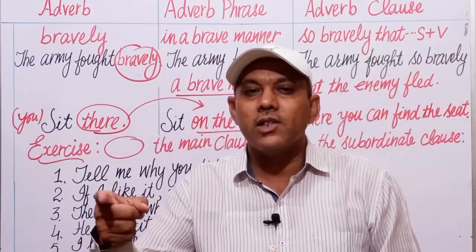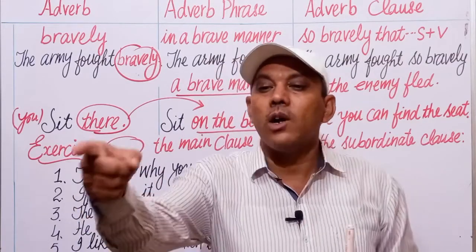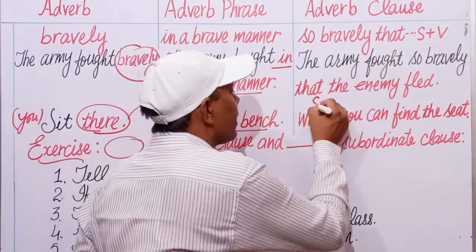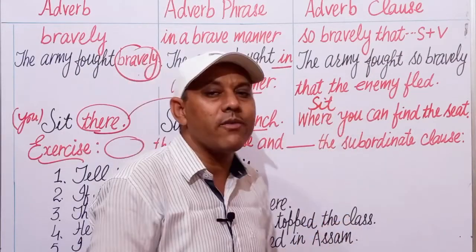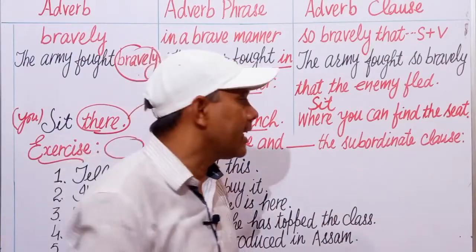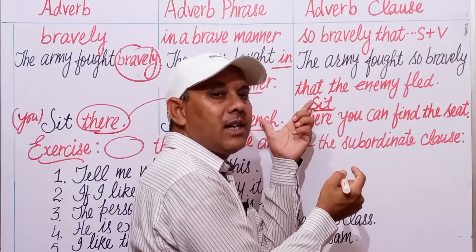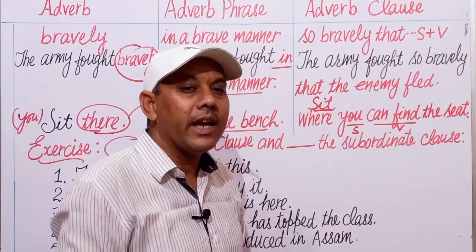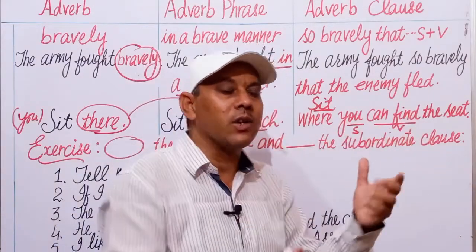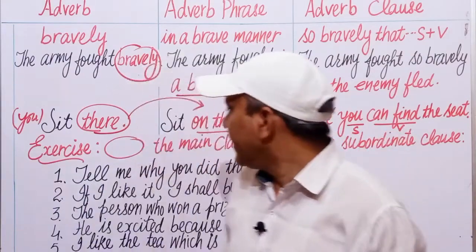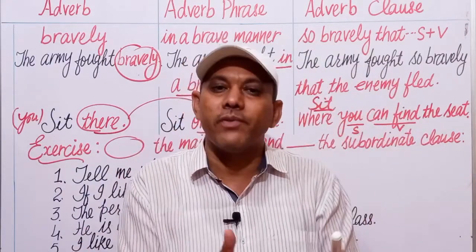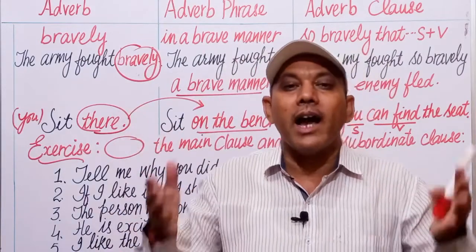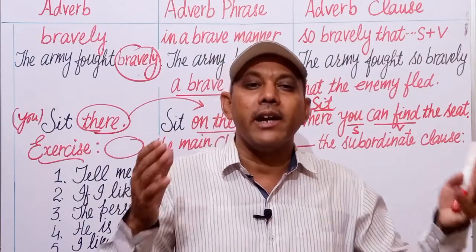Sit on the bench — to change 'there' into an adverb phrase. Then to change it into an adverb clause: 'Sit where you can find the seat.' Here 'sit' is the verb and 'you' is the subject; we have formed a subject-verb combination to change the adverb into an adverb clause. In this way, we can change adverbs into adverb phrases and adverb phrases into adverb clauses.